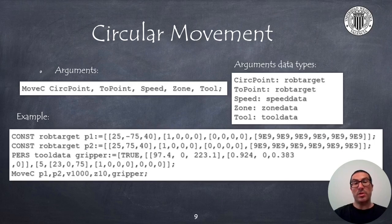The MoveC instruction defines a circular motion. The movement is defined from the current robot position, a middle point in the circle, and the target point. Actually, we only need to provide the middle circle point and the target point. Both of them are typed robtarget.